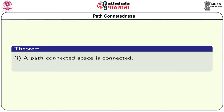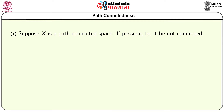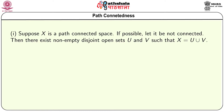We state a theorem: a path connected space is connected, and the continuous image of a path connected space is path connected. We shall prove these two results. Suppose X is a path connected space; if possible, let it be not connected. Then there exist non-empty disjoint open sets U and V such that X equals U union V.